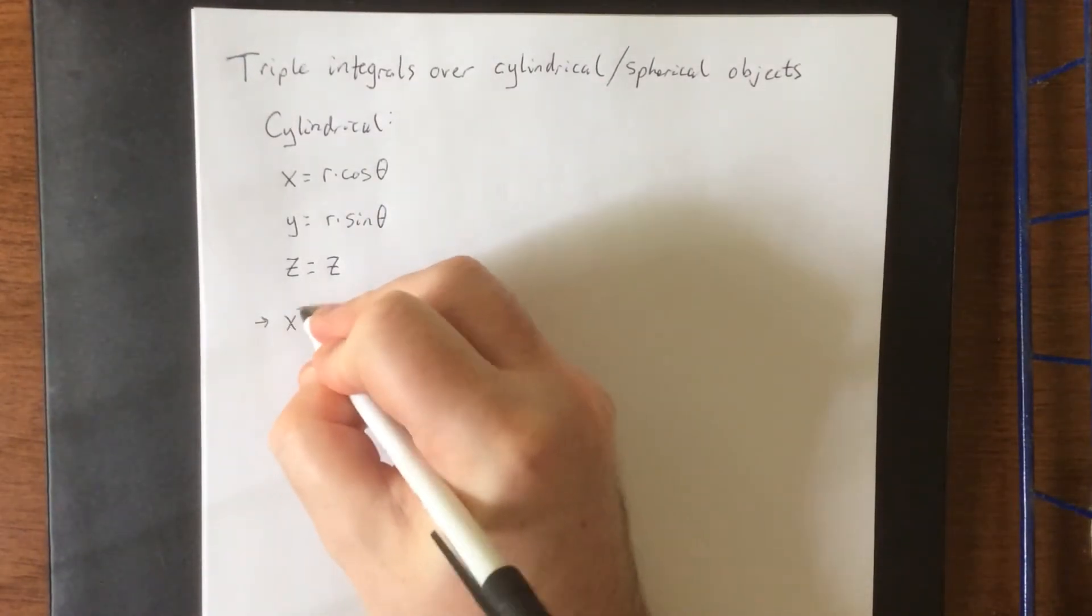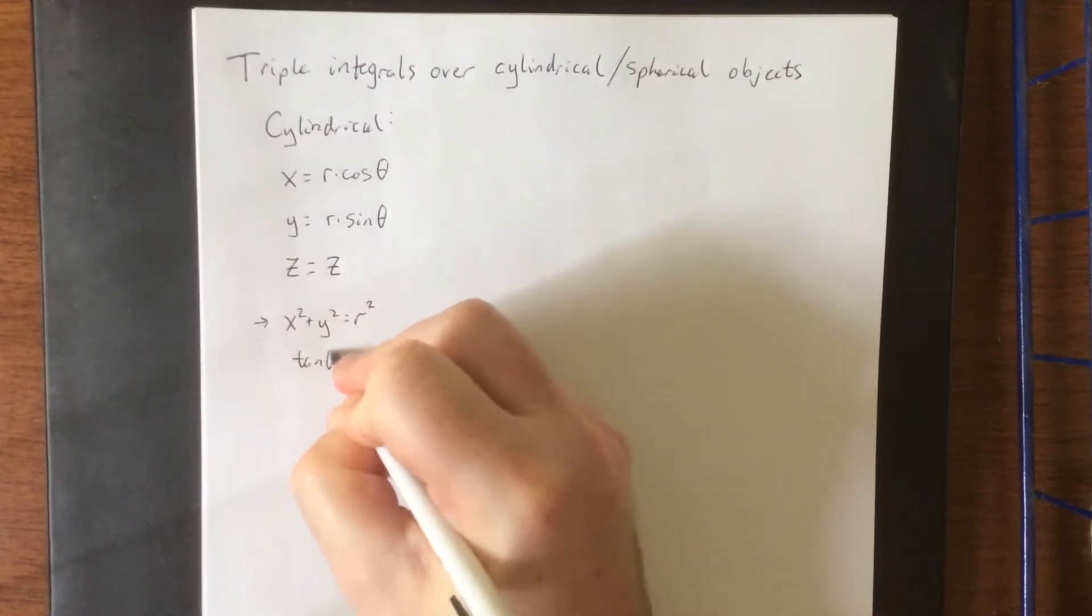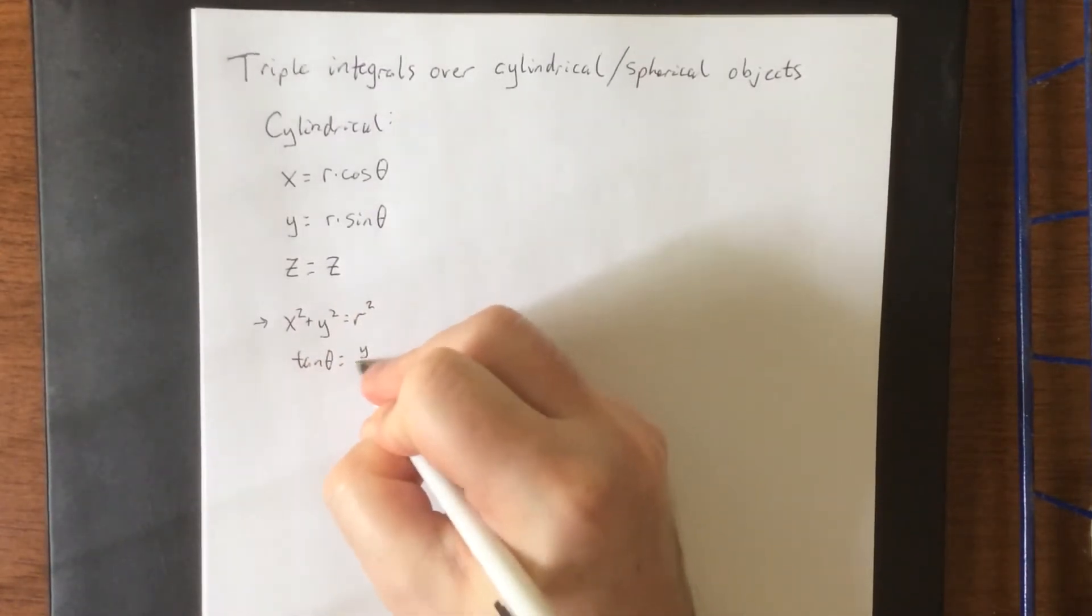As a result of this we also get that x squared plus y squared is equal to r squared and that the tangent of theta is equal to y over x.